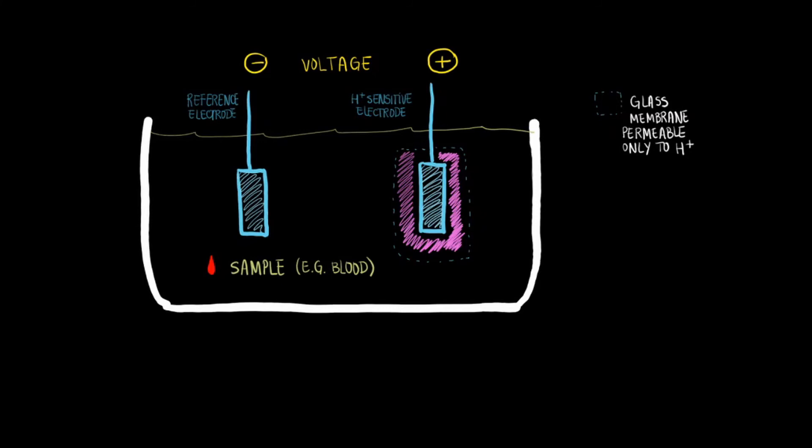Inside the membrane, there is a saturated solution of hydrochloric acid, or HCl. This saturated HCl solution ensures that the concentration of hydrogen ions inside the glass membrane compartment is constant or unchanging.